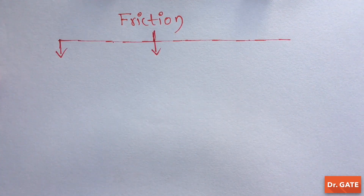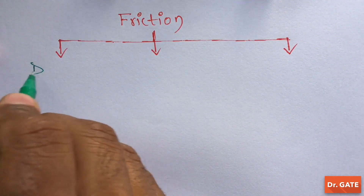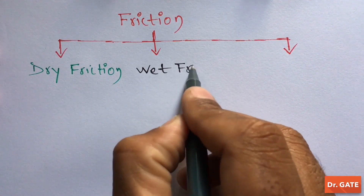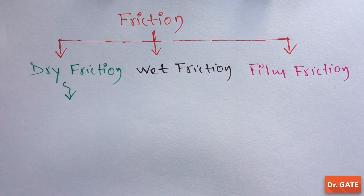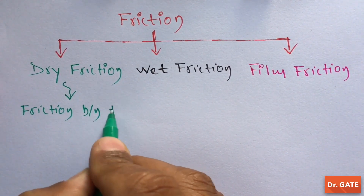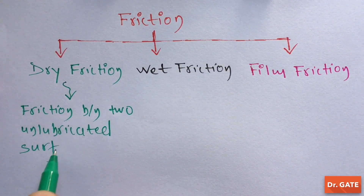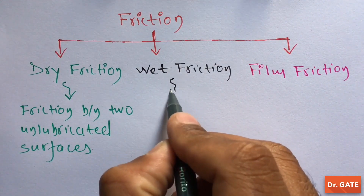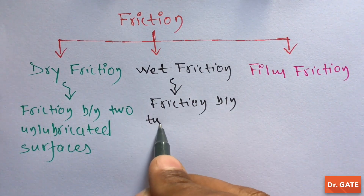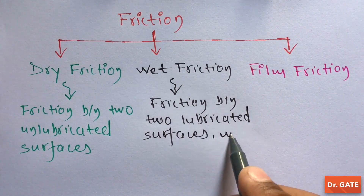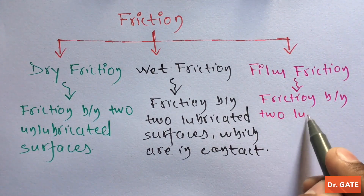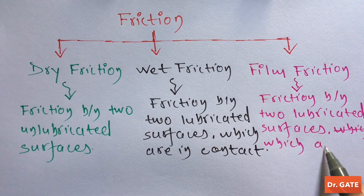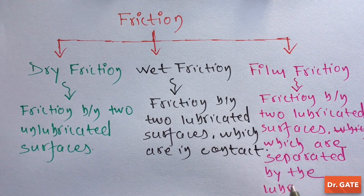There are basically three types of friction: dry friction, wet friction, and film friction. Dry friction is the friction between two unlubricated surfaces. Wet friction is the friction between two lubricated surfaces which are in contact. And film friction is the friction between two lubricated surfaces which are separated by the lubricant.